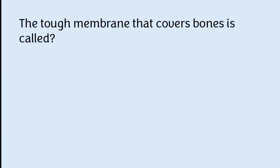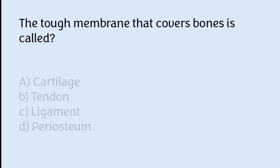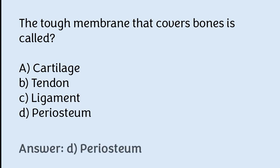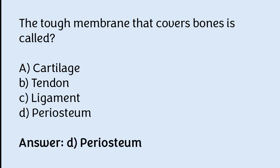The tough membrane that covers bones is called: cartilage, tendon, ligament, or periosteum. The correct answer is option D — the tough membrane that covers bones is called periosteum.